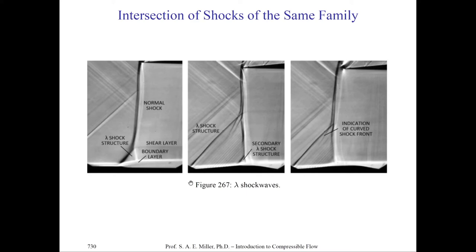You can see the little lambda shape in each of the Schlierens. There's an oblique shock, a weak second leg of the lambda, and a normal shock. By changing the wall direction, we can change the structure of the shock. In the middle section, you can see a very strong lambda shock which terminates in the middle, and there's a slip line. You can analyze the lambda shock with a combination of normal shock theory for the normal shock and oblique shock theory for the two legs of the lambda.